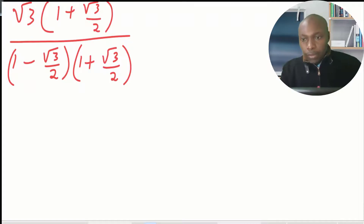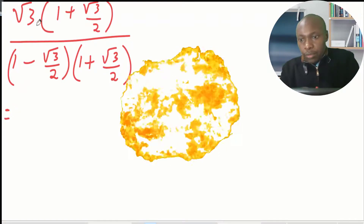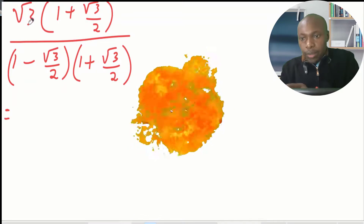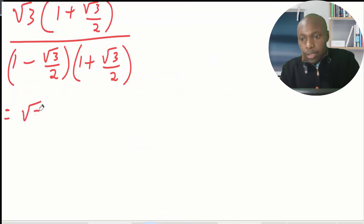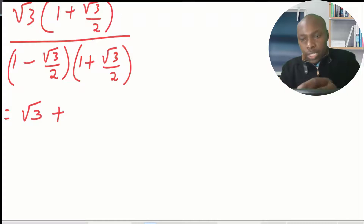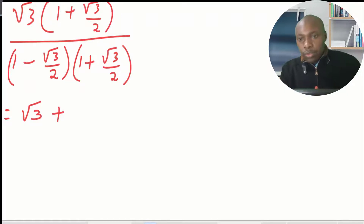We begin with the numerator. Opening the brackets: root 3 multiplied by 1 is root 3. Then plus root 3 times root 3 over 2 gives root 9 over 2, and root 9 is 3, so that gives 3 over 2.